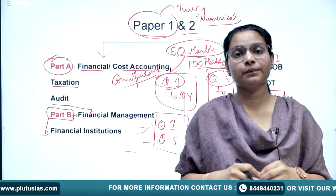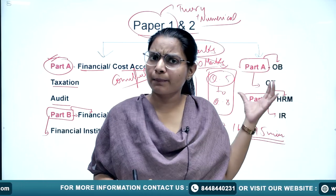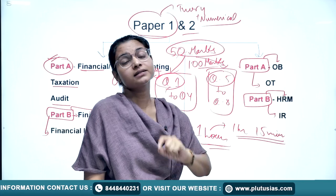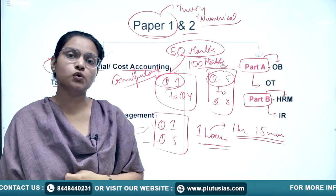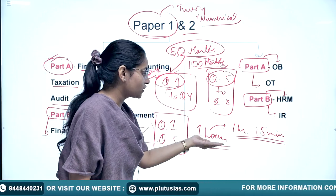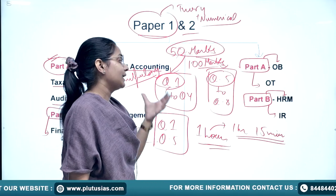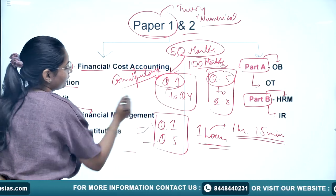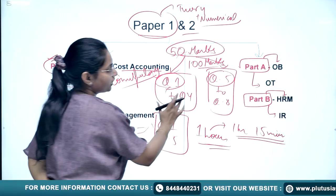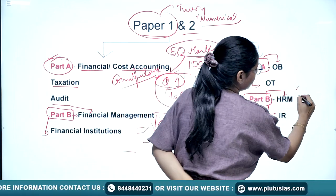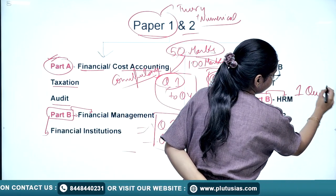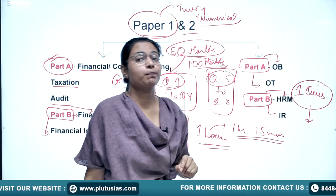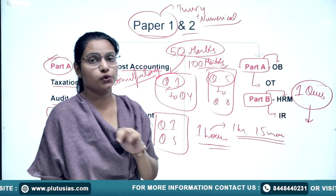You have to calculate the time carefully — how many minutes are required for each question. In Paper 1, numericals also need to be solved, so more time is needed. After solving questions 1 and 5 initially, look at the other questions to decide which to choose. From the remaining three questions in each part, you must attempt at least one question from each part, and then decide from which part to write two questions.